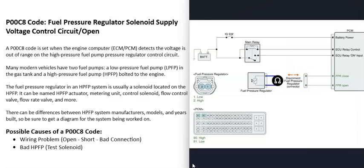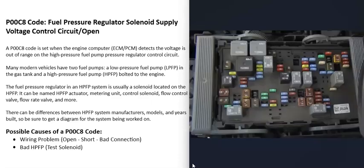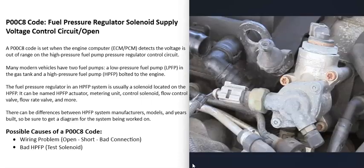The first thing I would do is test that solenoid and confirm it's good. You can also get wiring schematics for the particular vehicle and check for any open, short, or bad connections. It's also a good idea to check for any blown fuses or bad relays. If you have schematics, they'll tell you which fuse it's on and whether there is a relay.